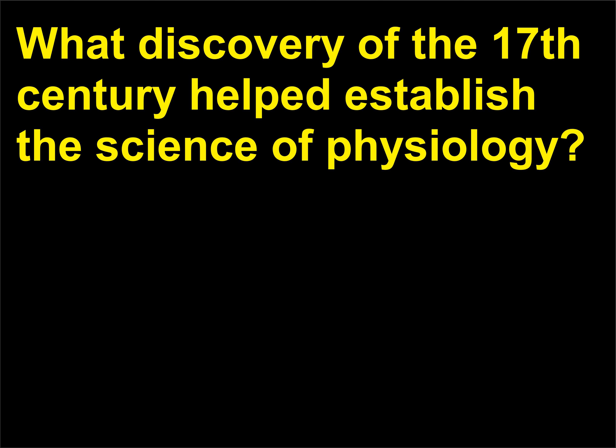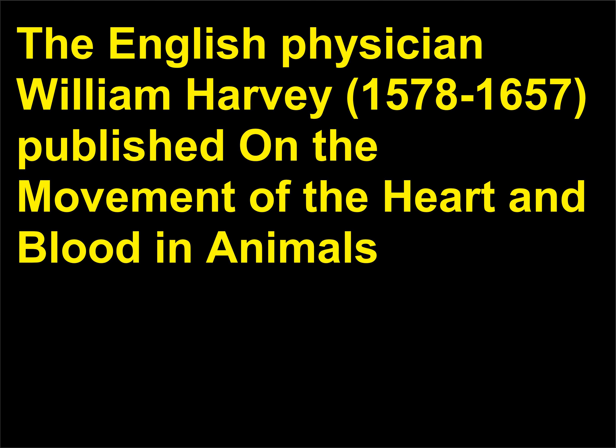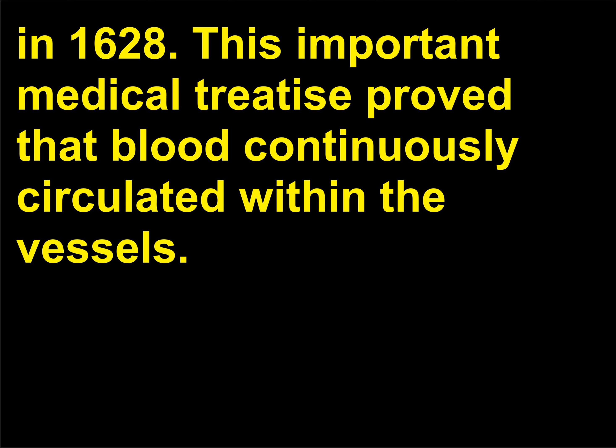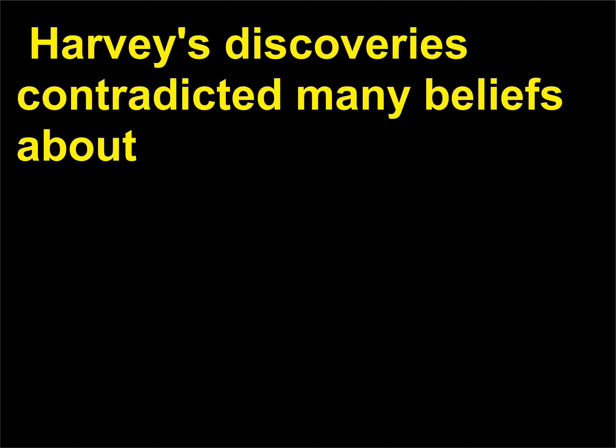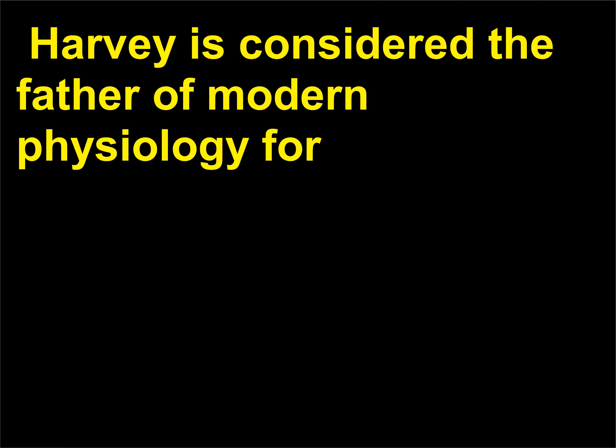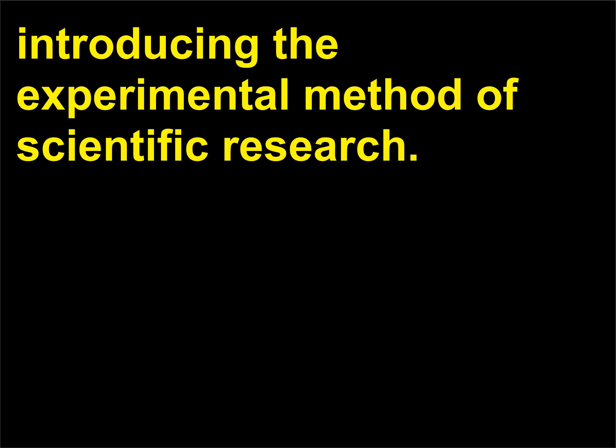What discovery of the 17th century helped establish the science of physiology? The English physician William Harvey, 1578-1657, published on the movement of the heart and blood in animals in 1628. This important medical treatise proved that blood continuously circulated within the vessels. Harvey's discoveries contradicted many beliefs about blood circulation that dated back to the time of Galen. Harvey is considered the father of modern physiology for introducing the experimental method of scientific research.